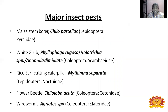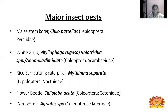The major insect pests of maize in India are: first, the most important pest is stem borer, Chilo partellus, order Lepidoptera. Next is white grub, Phyllophaga rugosa, order Coleoptera. Next is rice ear-cutting caterpillar or armyworm, Mythimna separata, also Lepidoptera. Next is flower beetle or pollen beetle, Chiloba acuta, Coleoptera. And wireworm, Agriotes species, also a beetle under Coleoptera order. These are the major insect pests causing damage and yield reduction in maize.